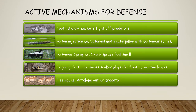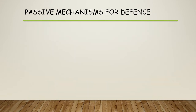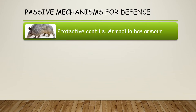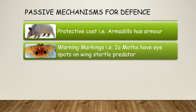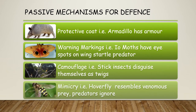Other active individual defence mechanisms include fleeing — antelope outrunning lions — and distraction displays, where lapwings run away pretending to be injured to lure predators away from their nest sites. Passive mechanisms include a protective coat such as the armadillo's armour, warning markings like the eye spots on the Iowa moth's wings to startle predators, camouflage such as the stick insect disguising itself as a twig, and mimicry — the hoverfly resembles venomous prey so predators ignore it.